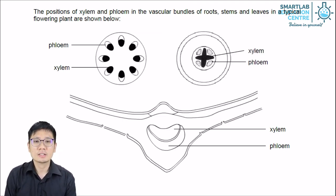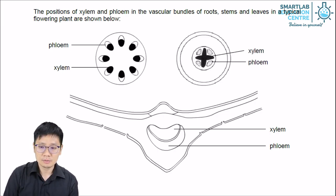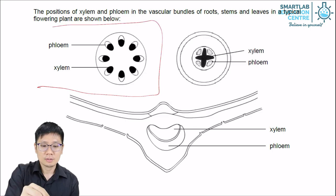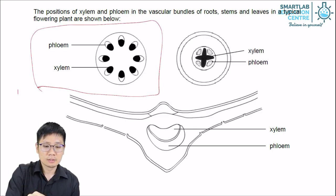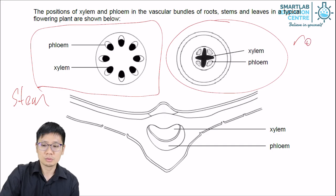This is a summary diagram showing all three vascular bundle arrangements: that of the stem, that of the root, and that of the leaf.